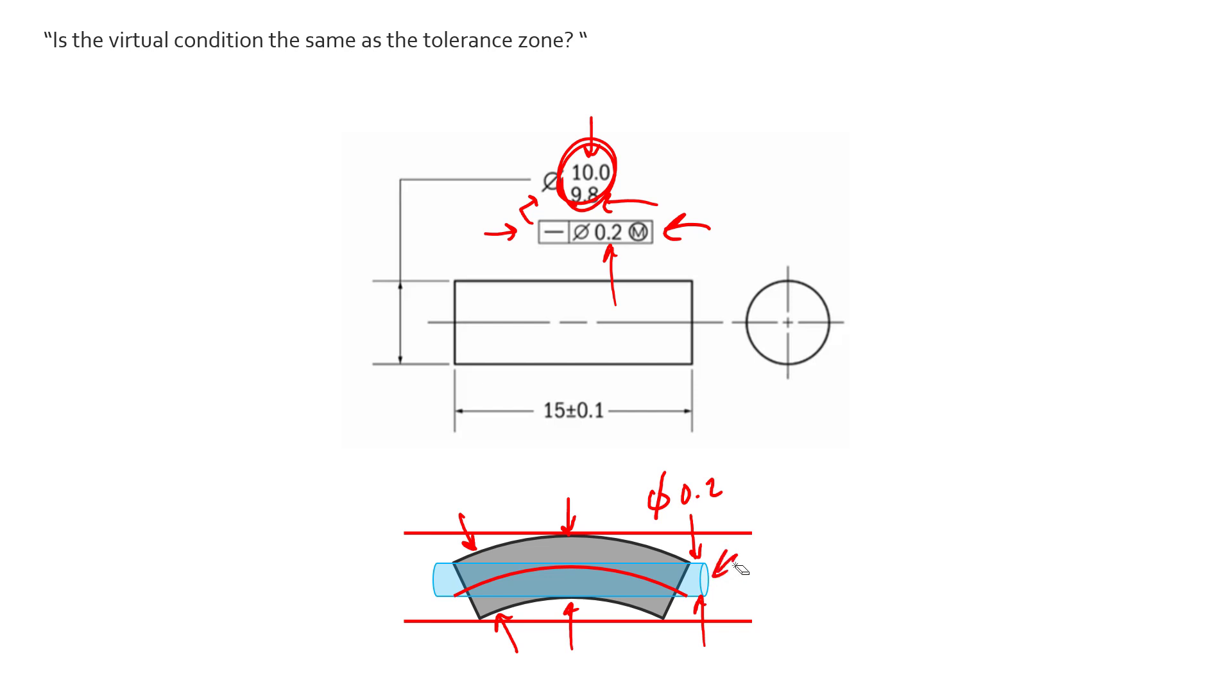What we're talking about here with virtual condition - virtual condition is a calculation we can do to come up with an envelope that creates worst case scenario. The worst case scenario, if we take into account geometric tolerances as well as size tolerances, that gives us our virtual condition.